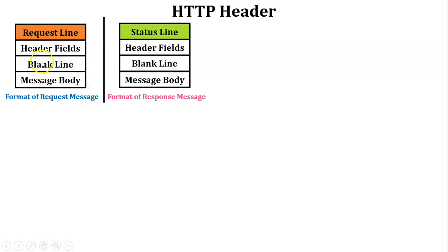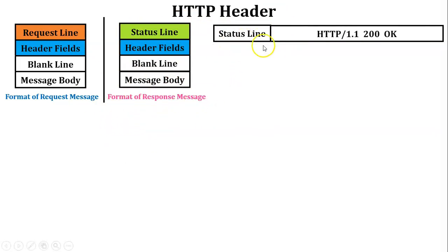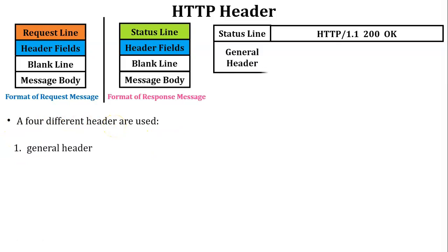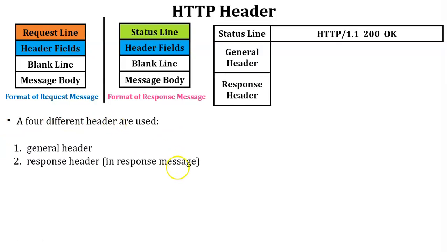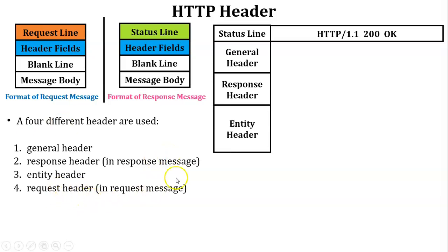The remaining three fields — header field, blank line, and message body — are the same in both request and response message formats. Four different headers are used: general header, response header, entity header, and request header. General header and entity header are present in both request and response messages. Request header is present only in the request message, and response header is present only in the response message.